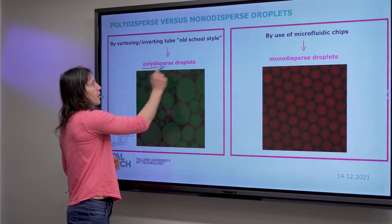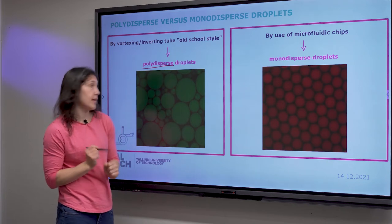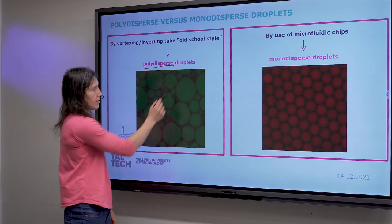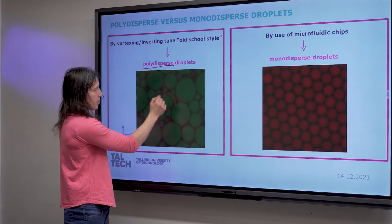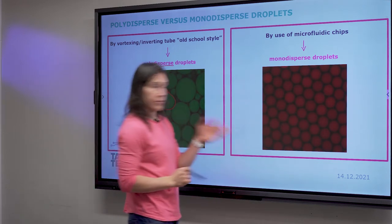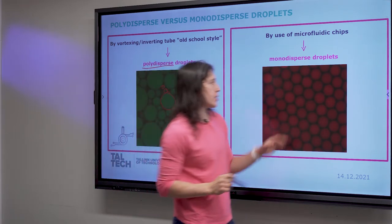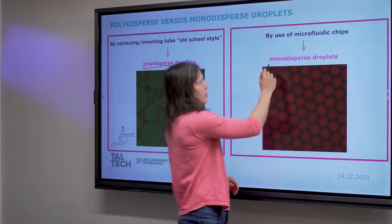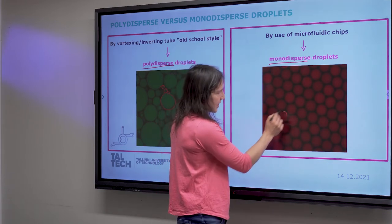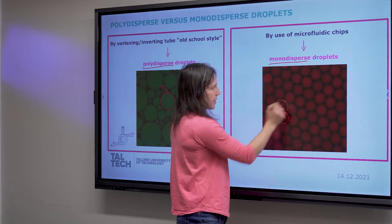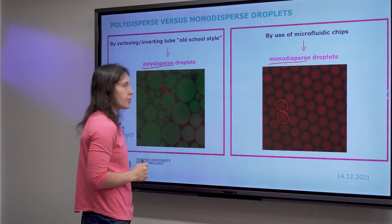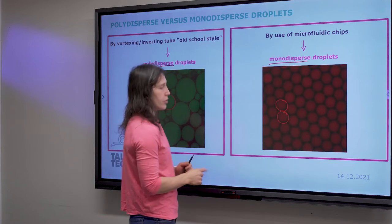What is the outcome of these two different methods? You have two different types of droplets. The first is what we call polydispersed droplets, meaning they are not uniform in size — you have some that are big and some that are very small. With the microfluidic chip, you get what we call monodispersed droplets, meaning they are basically the same size. You might have a tiny bit of difference, but mainly they are all uniform.